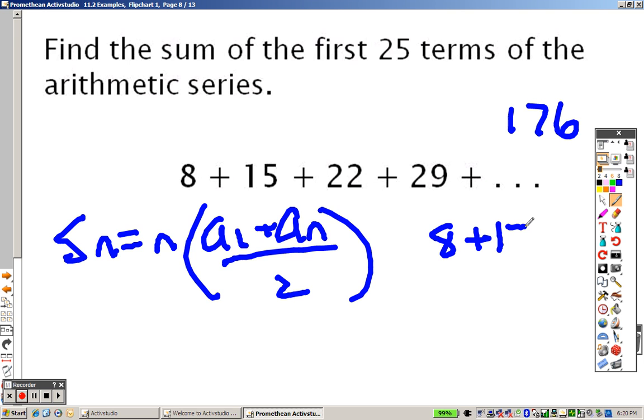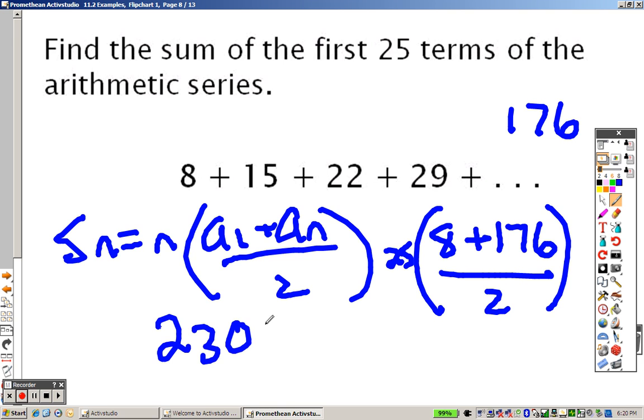The last term I need, the 25th term, is 176. I need to divide that by 2. And N is 25, because I want the 25th term. So 8 plus 176 equals 184. Divided by 2 is 92. 92 times 25. The sum of those terms is 2300.